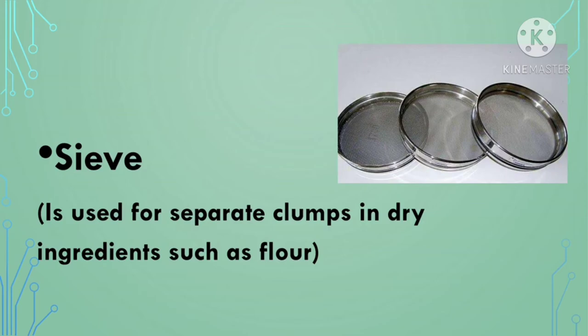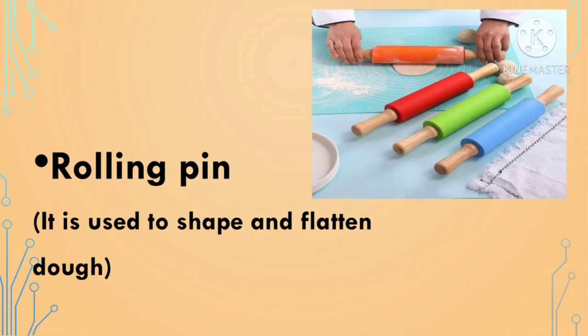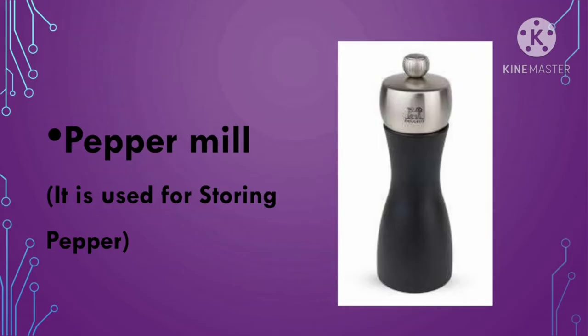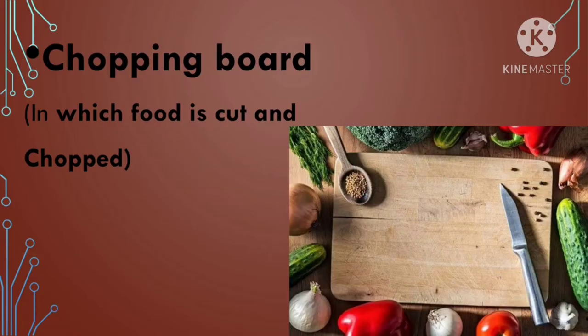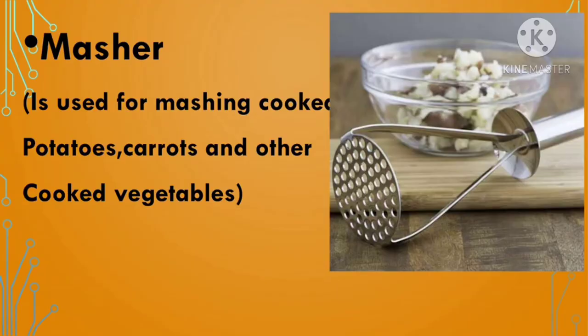Rolling pin is used to shape and flatten dough. Pepper mill is used for storing and grinding pepper. Peeler is a knife for removing the skin from fruits and vegetables. Chopping board is the surface on which food is cut and chopped. Masher is used for mashing cooked potatoes.